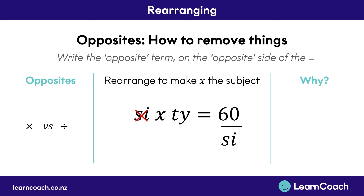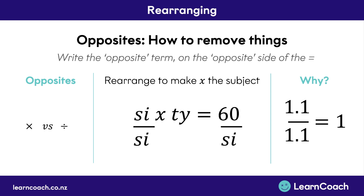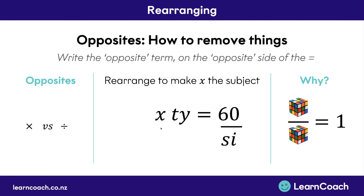Here's a quick sidebar about why this works. We can divide by SI on the right-hand side because we've actually done the same thing on both sides — divided by SI on the left as well, which leaves SI divided by SI. Anything divided by itself, like 6 divided by 6 or 1.1 divided by 1.1, always equals 1. So SI divided by SI equals 1, which means we have 1 times X — and 1 times X is just X, so we don't even need to write it out.